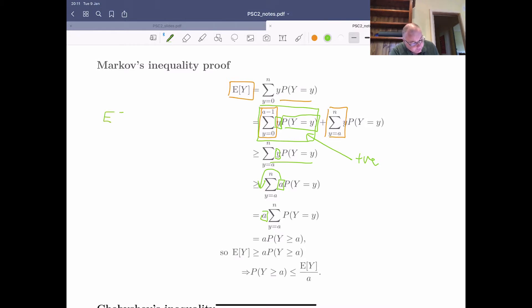We started with the expected value of Y. And we've done a series of steps where we had some equalities, and then some greater than and some greater than. So in the end, we finally got to this. So that must mean that that is greater than or equal to a times the probability that Y is greater than or equal to a. So now we just do our rearrangement to get Markov's inequality.